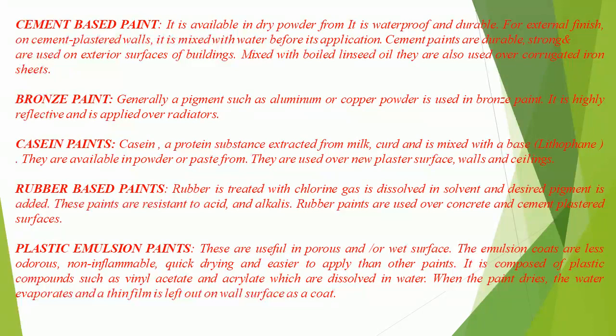Bronze paint: Generally a pigment such as aluminum or copper powder is used; it is highly reflective and is applied over radiators. Casein paint: Casein, a protein substance extracted from milk curd, is mixed with a base such as lithopone. They are available in powder or paste form and are used over new plaster surfaces, walls, and ceilings. Rubber-based paints: Rubber is treated with chlorine gas, dissolved in solvent, and a desired pigment is added. These paints are resistant to acid and alkalis, and are used over concrete and cement plastered surfaces.